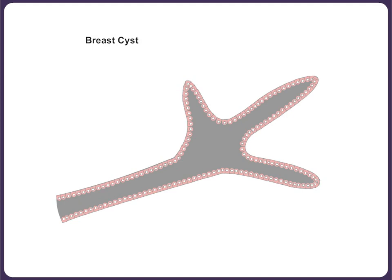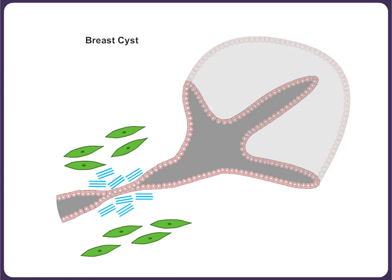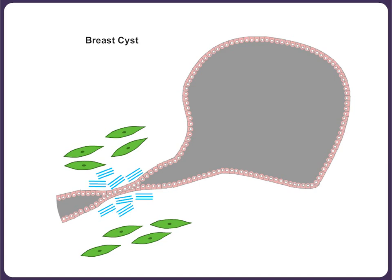In the perimenopausal period, involutional changes with overgrowth of the fibroconnective tissue around the ducts lead to ductal blockade. Dilatation and unfolding of the lobules along with pent-up secretion result in cyst formation. Initially, microscopic cysts are formed. Many such microscopic cysts may join to form a macrocyst.